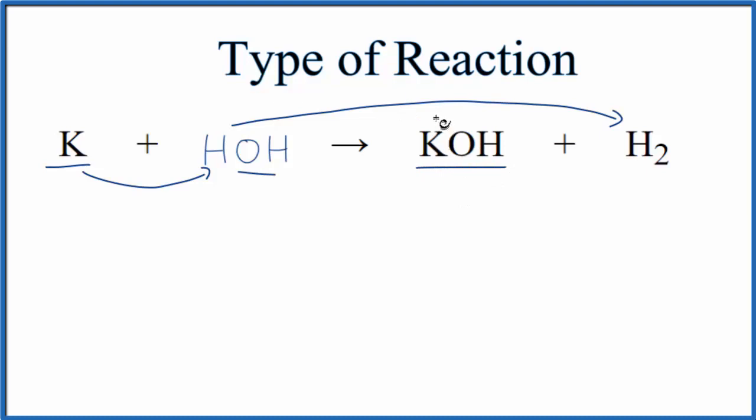And if we look at the charges, potassium forms 1+ ions, the hydroxide ion is 1-, so that makes sense. Those charges work out, this is the right compound.